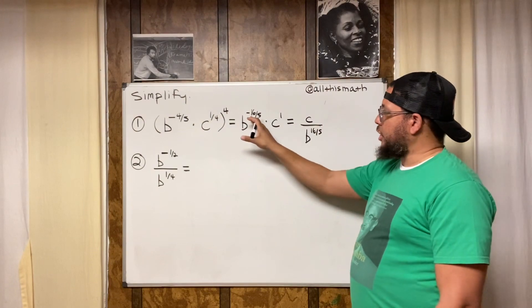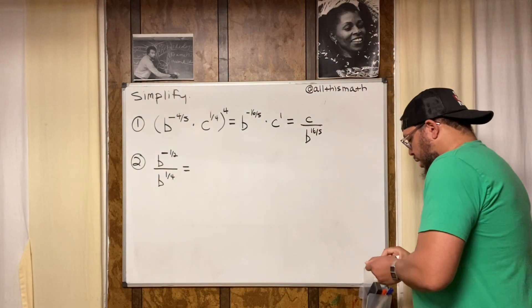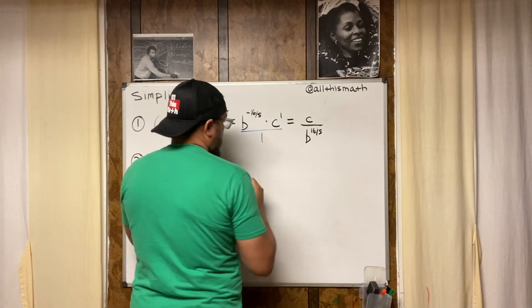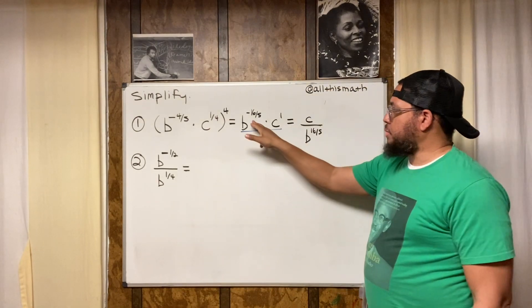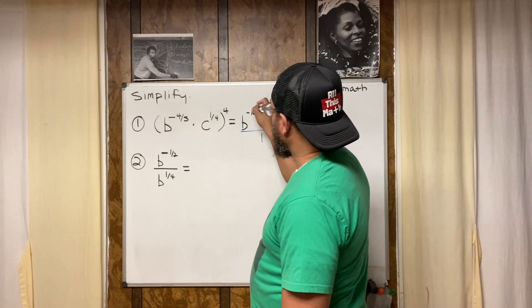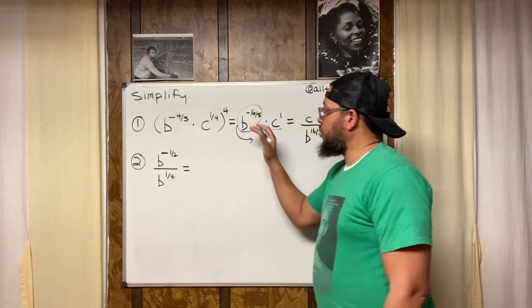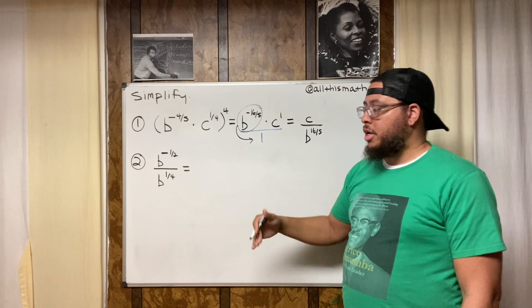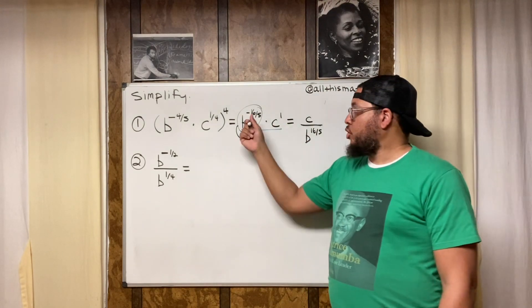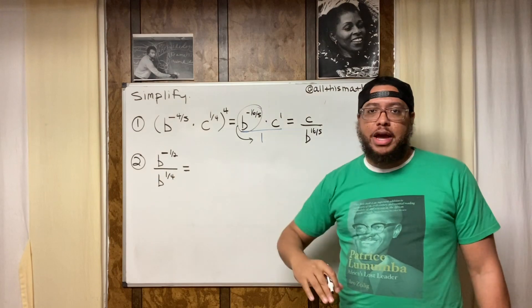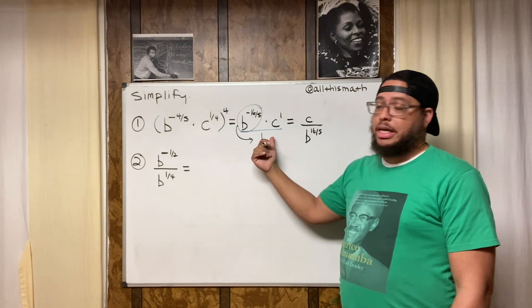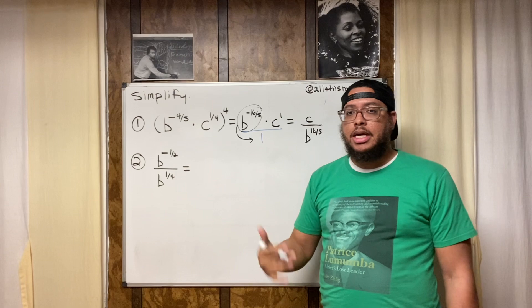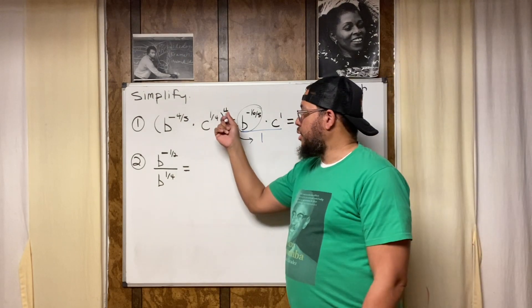Visualize the expression as a fraction over one. The b with the negative exponent goes downstairs to the denominator, and the purpose of moving it there is so the exponent turns positive. If a term with a negative exponent is already in the denominator, you can move it up top and the exponent becomes positive. You just have to memorize that — it's called the negative exponent rule.